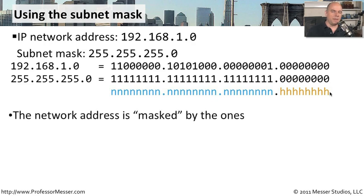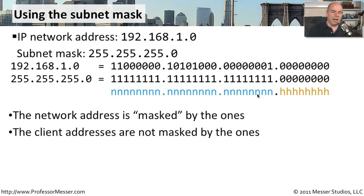Whenever we're looking at the mask, the mask is always going to have ones. We talk about the network address being masked by those ones, and that's why I put those N markers there — so we know that was the network. Everything that is not masked by the ones is there for the clients on that subnet. That's how the IP address and subnet mask work together to tell your computer what network it's on and what IP addresses it should expect to see locally.